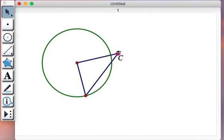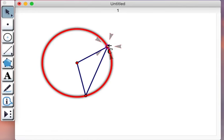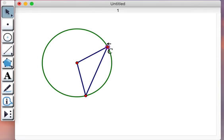Finally, I'll drag point C onto the circumference of the circle so that it only travels along the circumference.